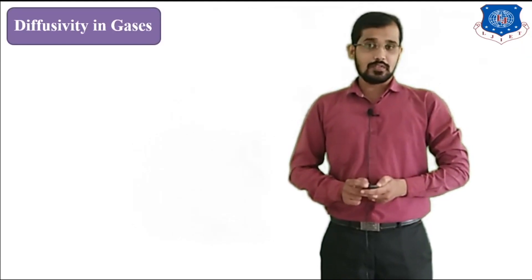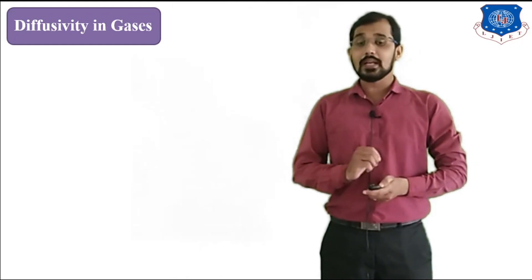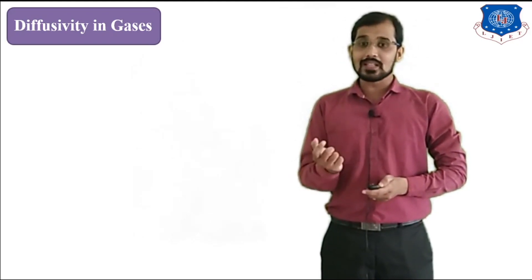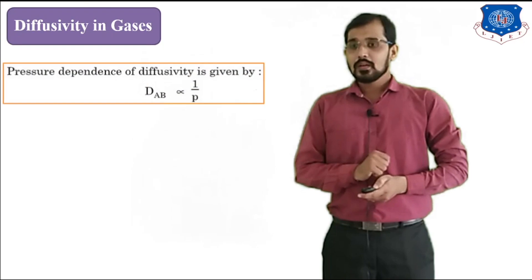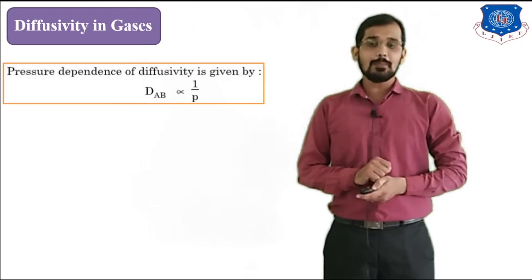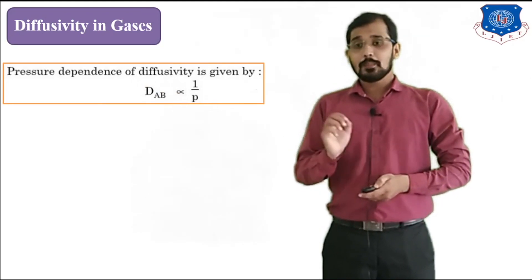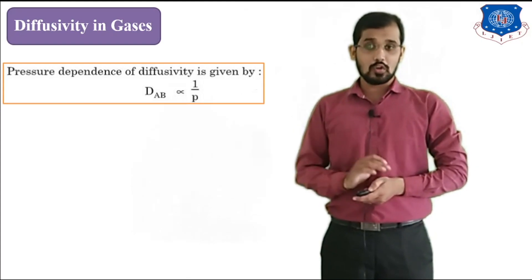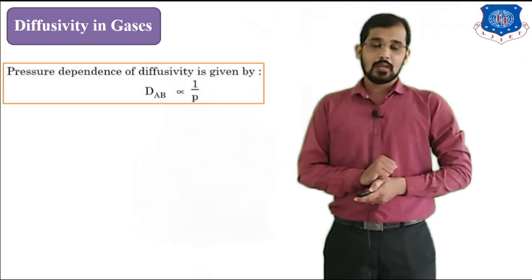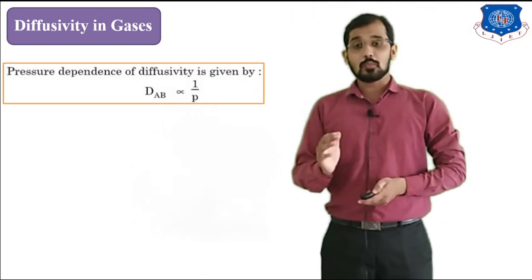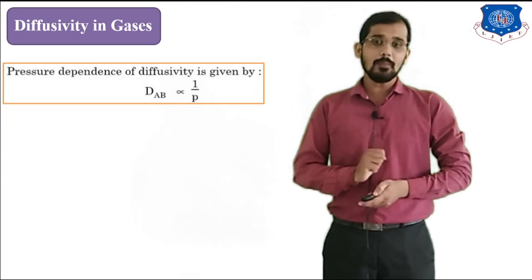Diffusivity can be represented by the diffusion coefficient, that is DAB and DBA. DAB means diffusion of component A with respect to B, and DBA means diffusion of component B with respect to A. Now we will see pressure dependency: DAB is inversely proportional to the pressure. This means pressure is inversely proportional to the diffusion coefficient of component A with respect to B, and similarly DBA is also inversely proportional to pressure.